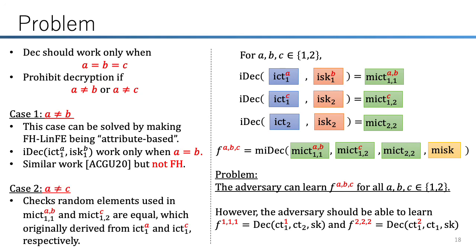The latter case is more complex. Intuitively, we prevent this case by checking that random elements used in MICT(1,1) and MICT(1,2) are the same. Since the random element in MICT is inherited from the ciphertext, the random elements used in MICT(1,1) and MICT(1,2) will differ with overwhelming probability if A does not equal C. Incorporating such checking functionality into the ACFGU linear MIFE is technically challenging, but I will not go into details here.